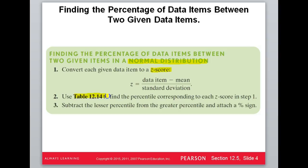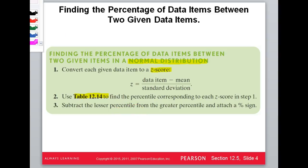Then we're going to use what's called the z-table, and find the percentage that corresponds to the z-score. That percentage is the percent that's below that value — that shows up in the table. When we're going between two items we subtract, but if we're going just to the left of one item, we only need to use just one. Let me give you a visual.